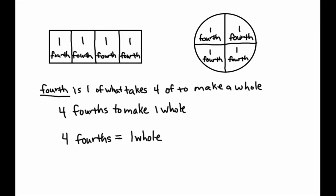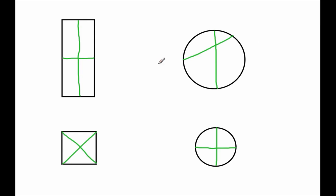Let's go to some pictures of rectangles and circles that have been partitioned to see if they are actually showing fourths or just showing four shares. Taking a look at this picture, we see there are one, two, three, four shares. We'd call them fourths only if each share is taking up the same amount of space. It does appear as if they are, so we would call this a diagram that shows fourths — this is a fourth, this is a fourth, this is a fourth, this is a fourth.